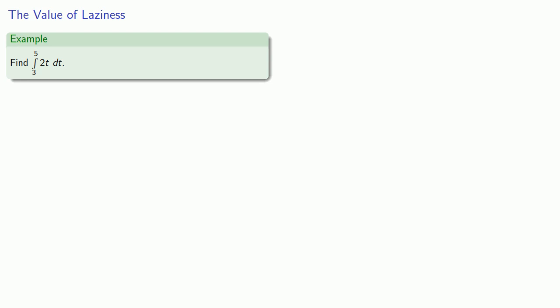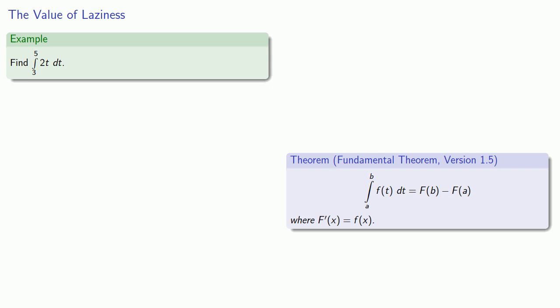So to find the definite integral from 3 to 5 of 2t dt, the revised version of the fundamental theorem says that this is going to be capital F of 5 minus capital F of 3, where the derivative of capital F is 2x. So we find a function whose derivative is 2x.